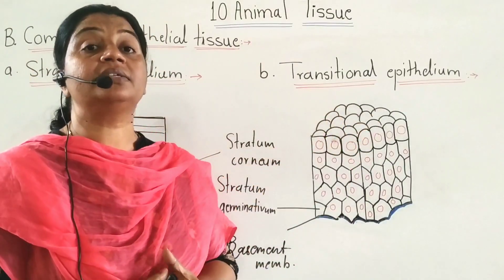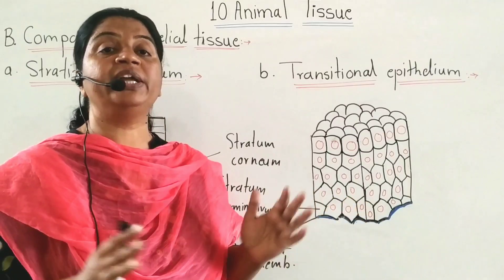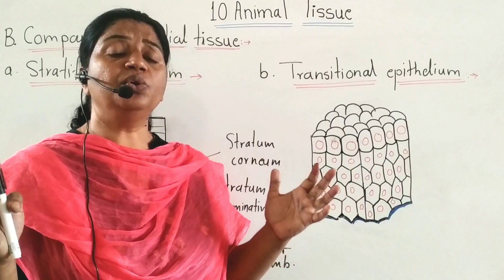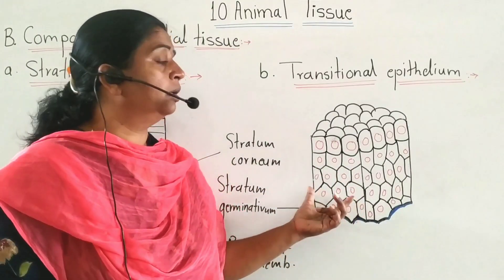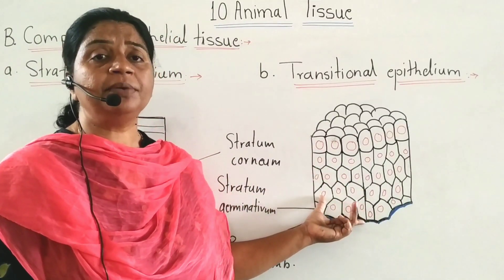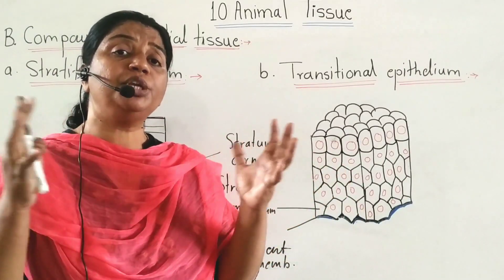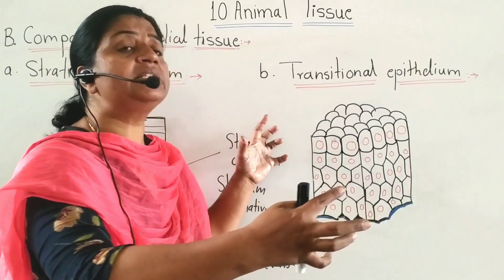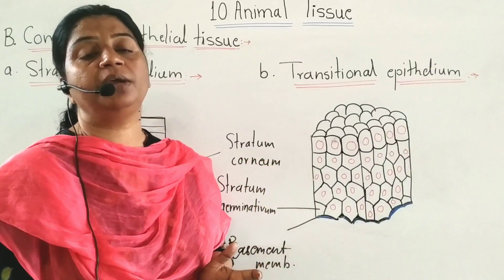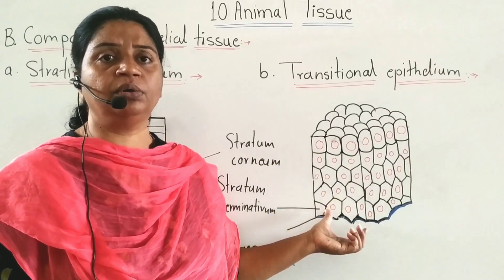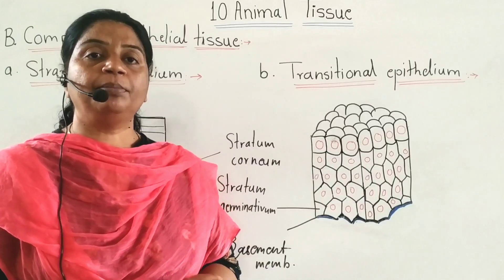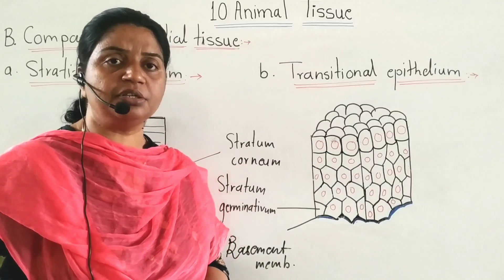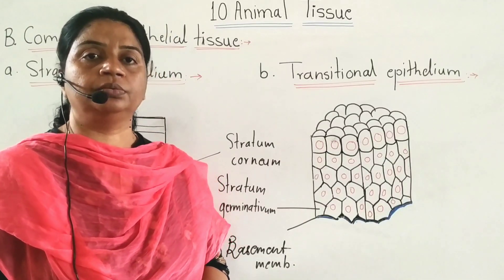Transitional epithelium has elasticity. Its function is distension of the organ — for example, it is located in the urinary bladder, allowing distension of the urinary bladder due to urine. When urine is stored, the cells are stretched and their shape changes according to the degree of stretching. So we have covered epithelial tissue and its types. Next we have cell junctions and connective tissue. Thank you.